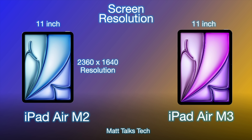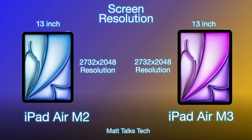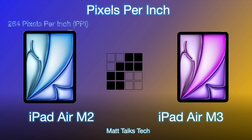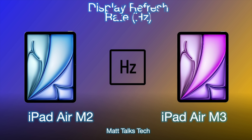For screen resolution on the 11 inch models, it's 2360 by 1640 — no differences there. For the 13 inch model it's 2732 by 2048 on both. For pixels per inch, all four iPads whether M2 or M3, 11 or 13 inch, have 264 PPI — exactly the same. For brightness, the 11 inch models have up to 500 nits on both M2 and M3, while the 13 inch model gets slightly more at 600 nits, whether M2 or M3. The display refresh rate is still 60Hz — we haven't gone up to ProMotion.